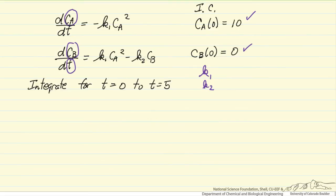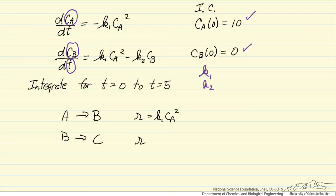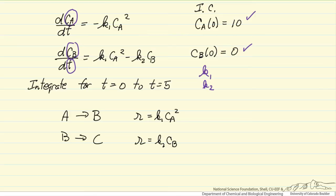These equations represent a physical system: a chemical reaction where A goes to B, and B goes to C. The rate of the first step is K1 times the concentration of A squared, and the rate of the second step is K2 times the concentration of B. For those interested, this is the problem where we're solving for the concentrations of A and B as a function of time in a batch reactor.